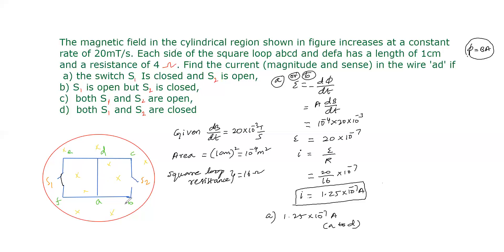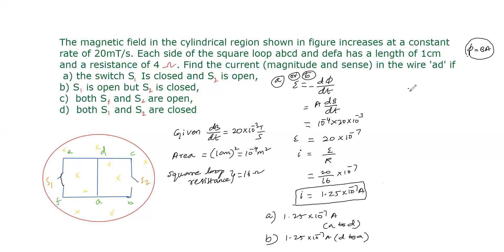For Case B (loop ADEFA closed), similarly the induced EMF must produce a field opposing the increasing inward flux. The current must flow so as to produce a field outward, which means in wire AD the current flows from D to A. So for Case B, current is 1.25 × 10⁻⁷ ampere from D to A.